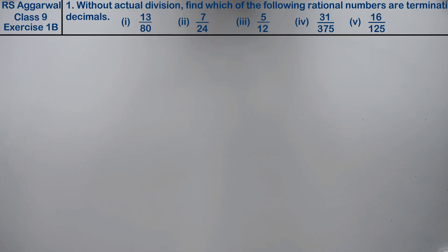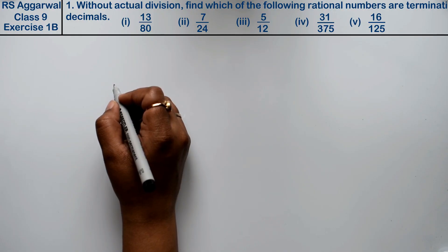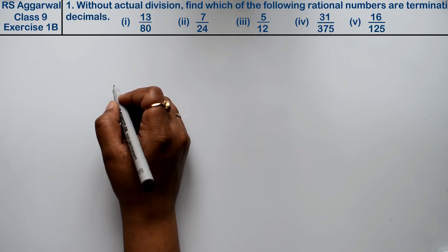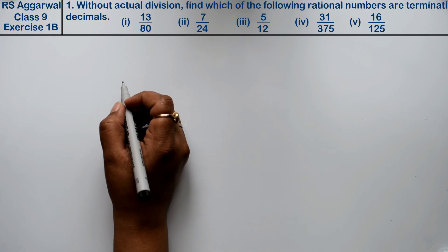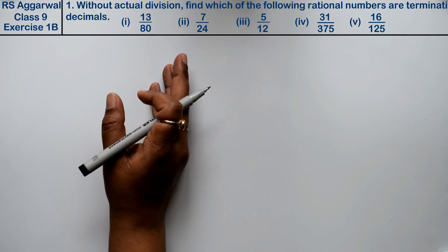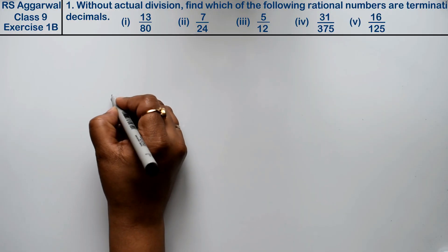Let's do question number one of exercise 1b, that is number system. Question number one is: without actual division, find which of the following rational numbers are terminating decimals. Terminating decimals are those which finish after the decimal point.